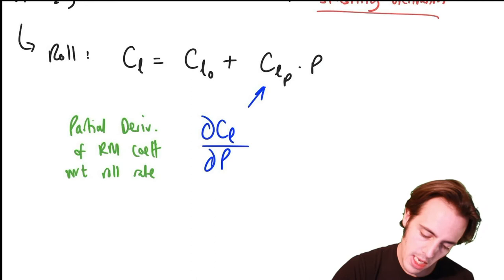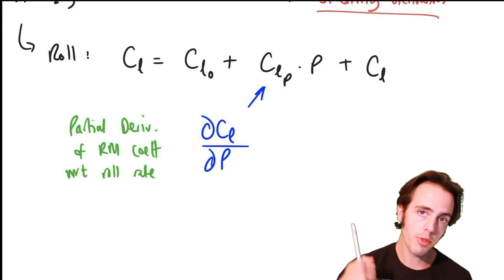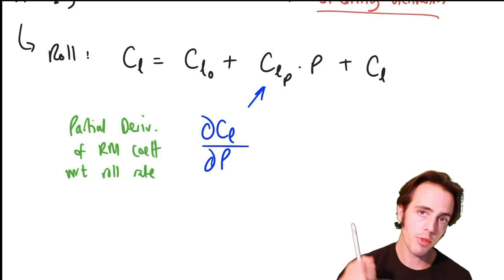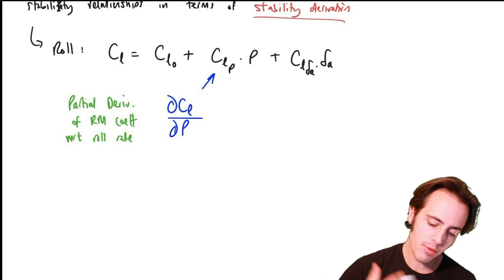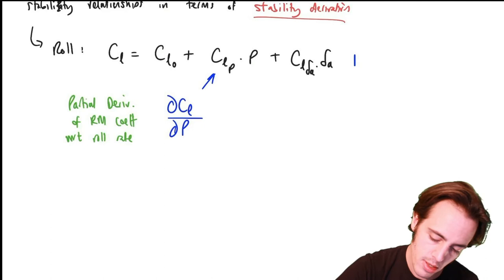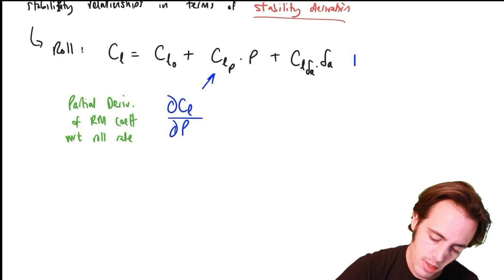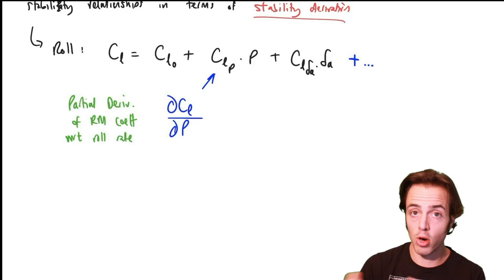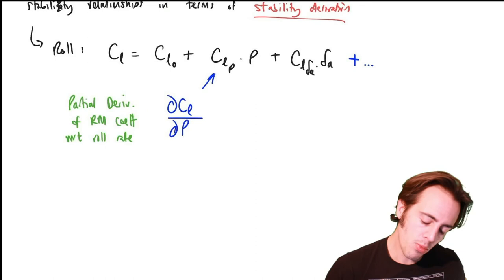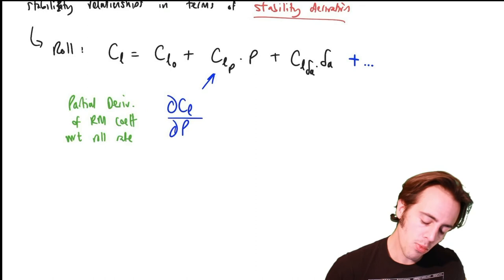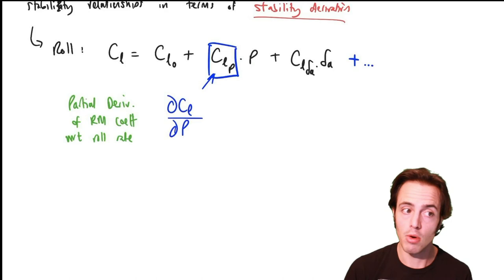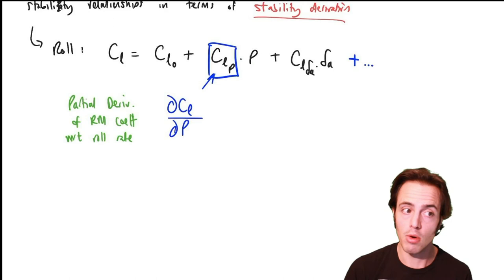I want you guys to be able to look at these derivatives, understand what they mean from the nomenclature, and think about what aircraft design parameters influence them. That's our roll model in derivative form. The control that we include in the roll model is the aileron: C_l_deltaA × delta_A. If we wrote this out fully as in the nonlinear equations of motion, we'd have a bunch of other cross-coupling terms, but we're not going to use those too much in this module.